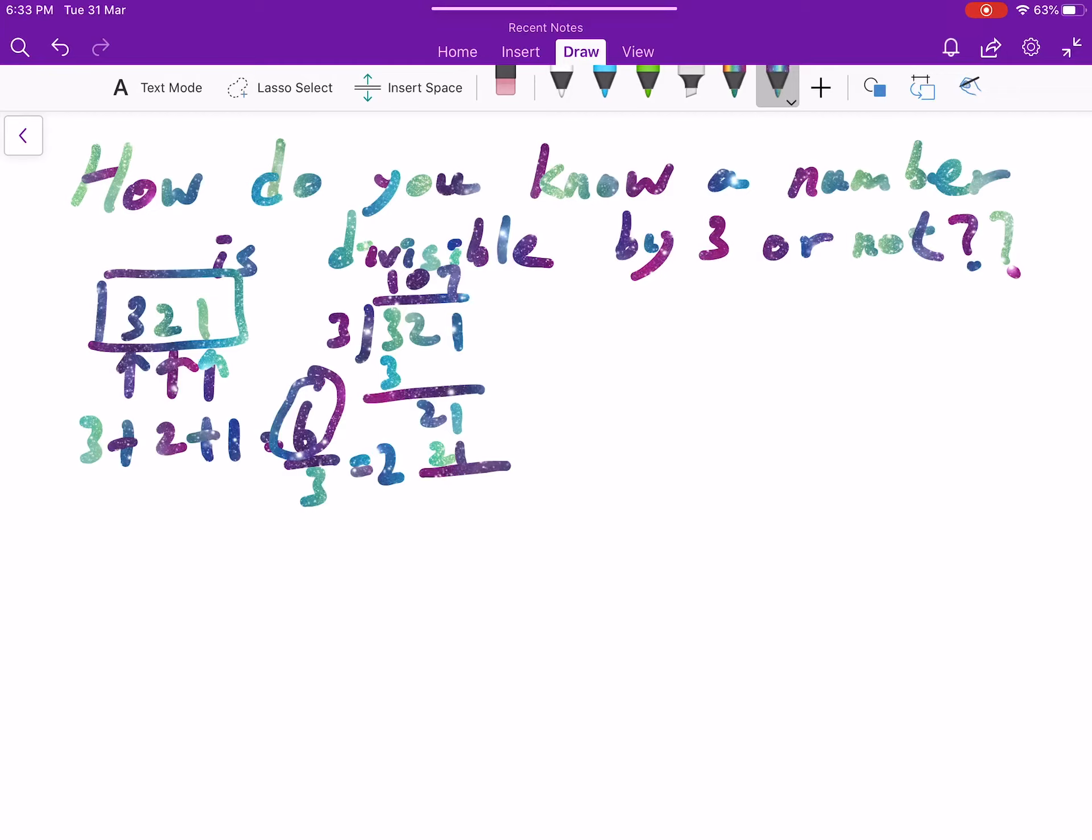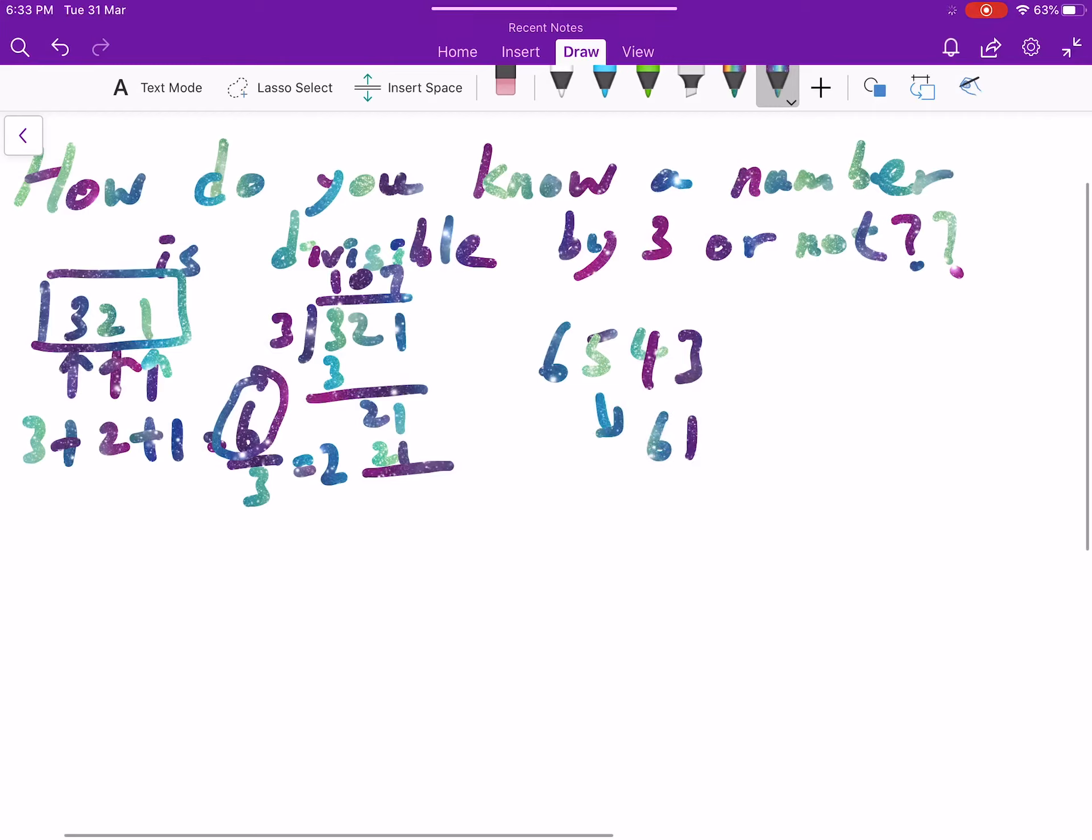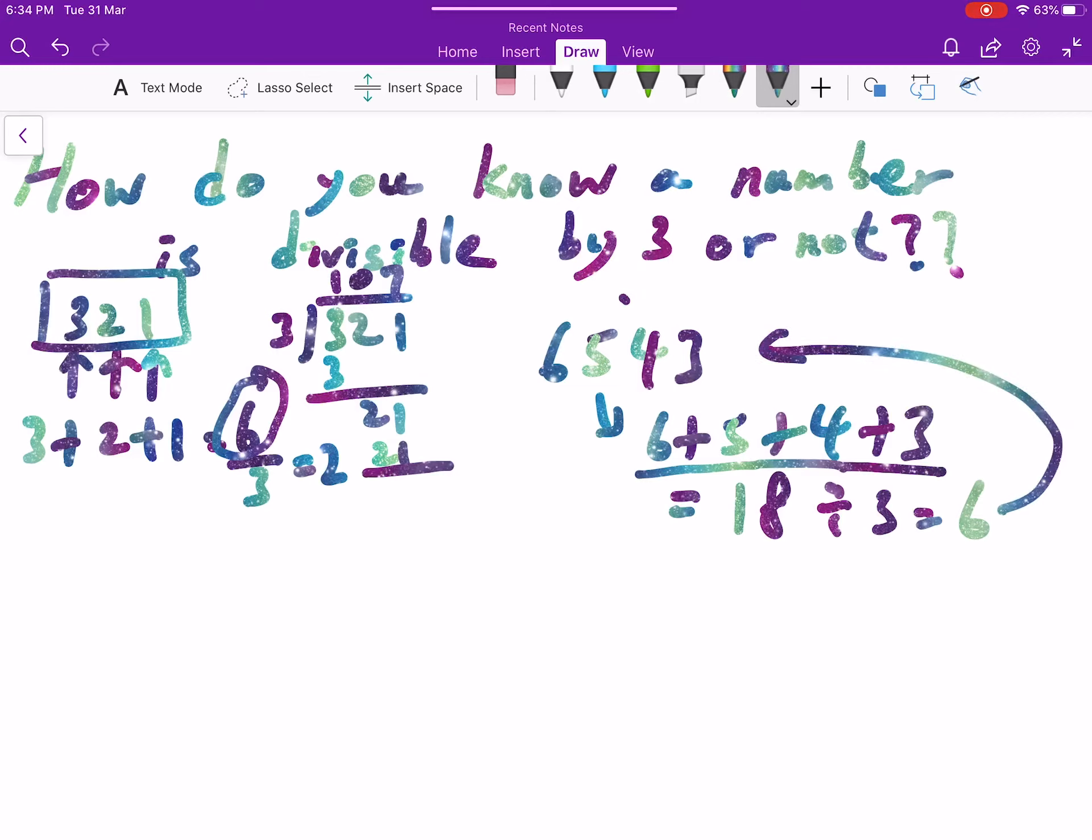It turns out to be a very easy method. When I give you a much larger number, let's say 6543, how can I know this number is divisible by 3? Let's do it again. I will consider 6 plus 5 plus 4 plus 3. What we have here now is 11, 15, 18. So 18 divided by 3, we get 6. Much easier. So this one actually is divisible by 3.